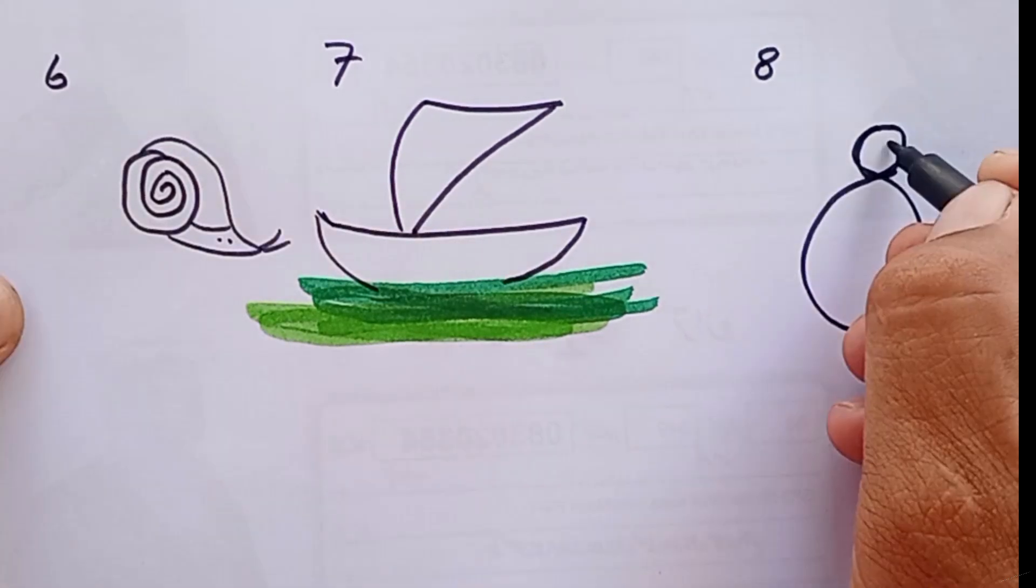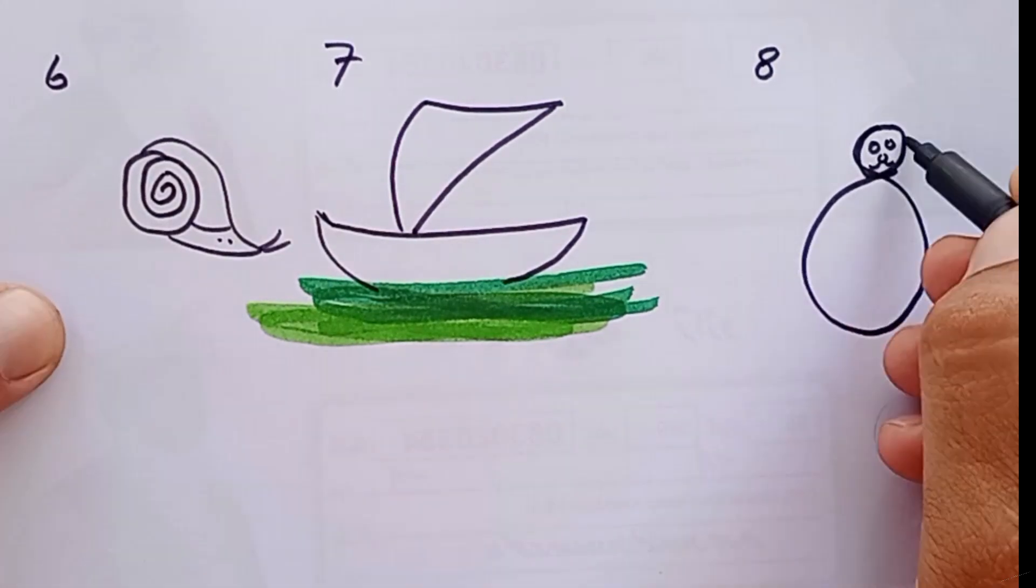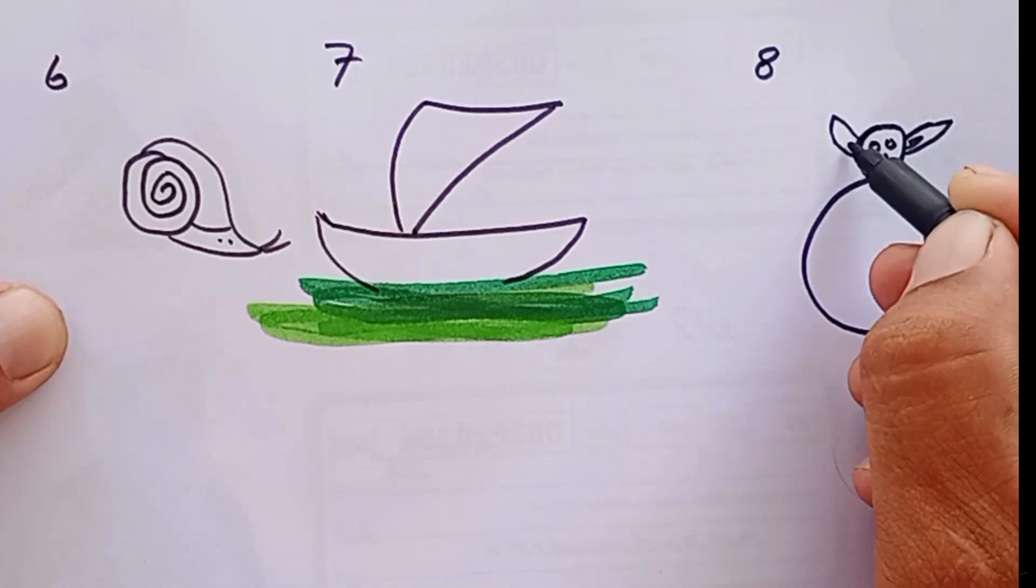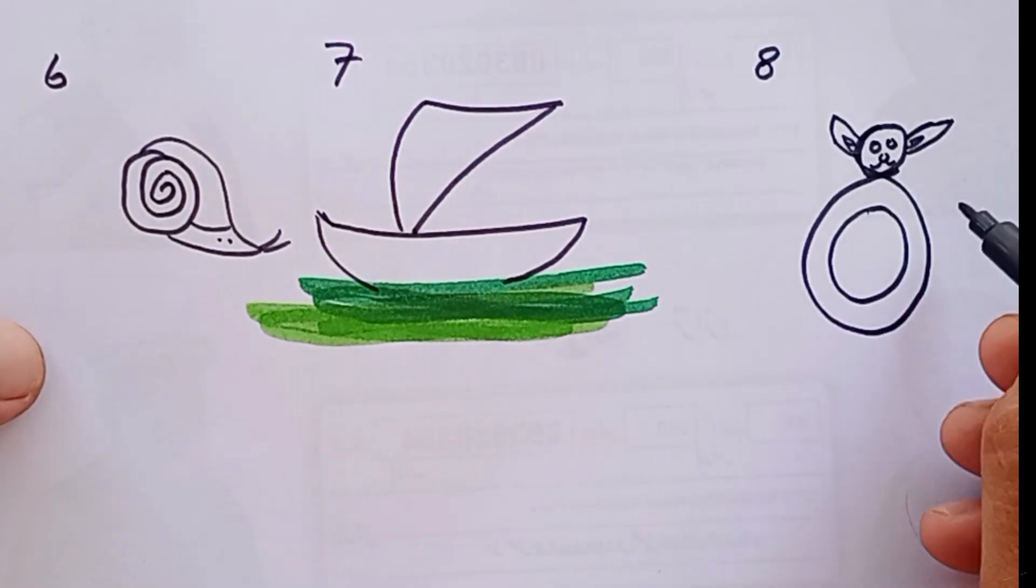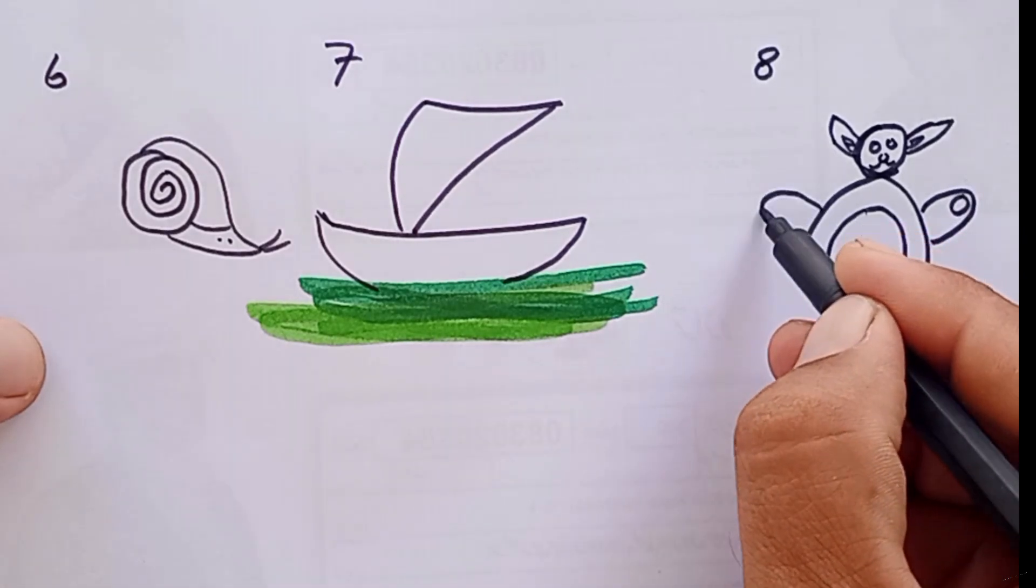As she ate, she felt happy and slow. Suddenly, a big raindrop fell on her shell. Oh no, she said, I'm stuck.